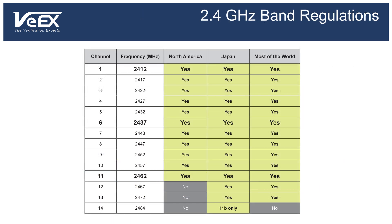In the US, the allocation is regulated by the FCC, and each country has its own regulatory agency. Channels 12 and 13, centered around 2.467 and 2.472 GHz respectively, are not allowed in the US but are allowed in the rest of the world, while channel 14, centered around 2.484 GHz, is allowed only in Japan.